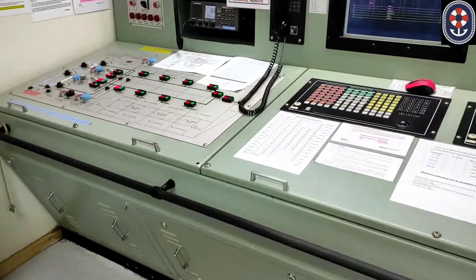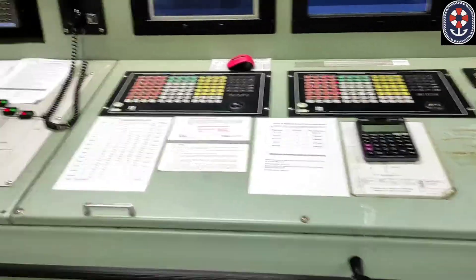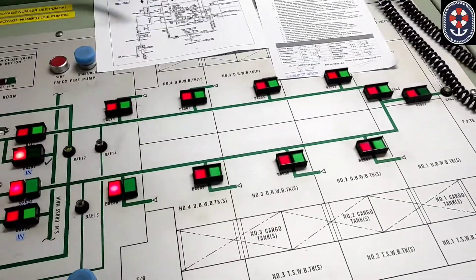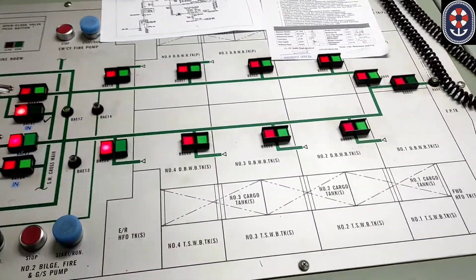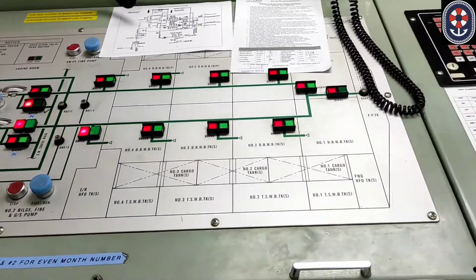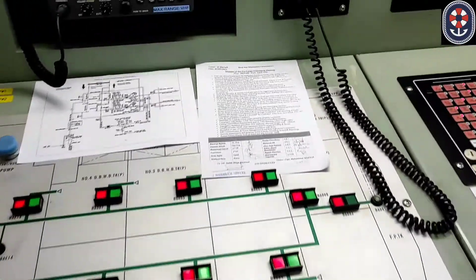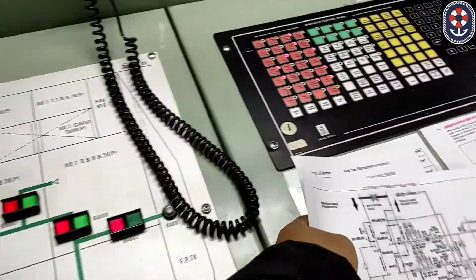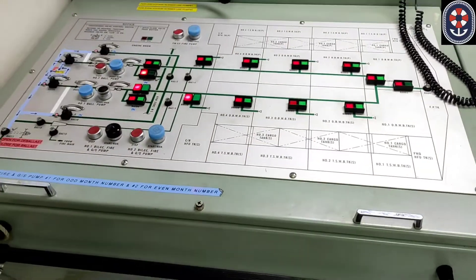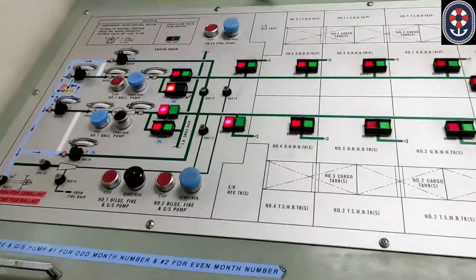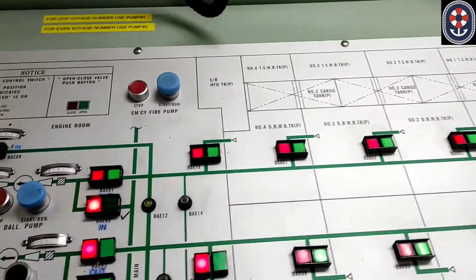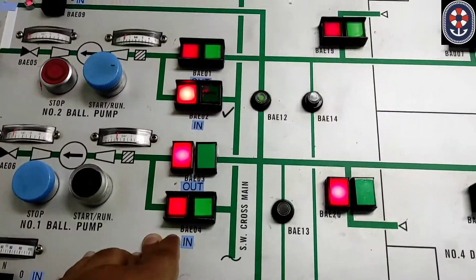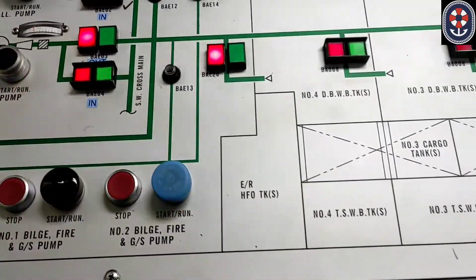Basically, when we come to the ballast line-up systems and ballast system, it looks the same as normal tankers. But the only difference which I see in gas tankers is that there are many valves which are in the engine rooms. As you can see here, it is mentioned BAE03, BAE04, so this E indicates that they are in the engine room. Even this four-number tank valve is in the engine room.